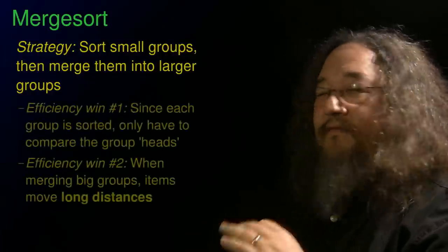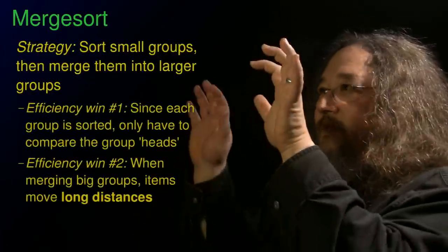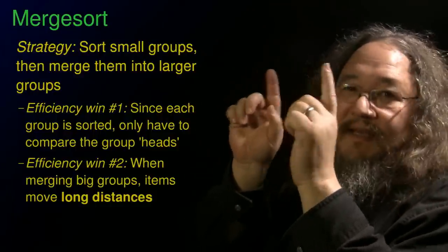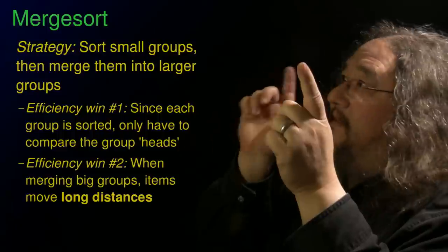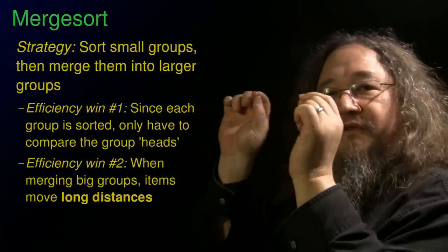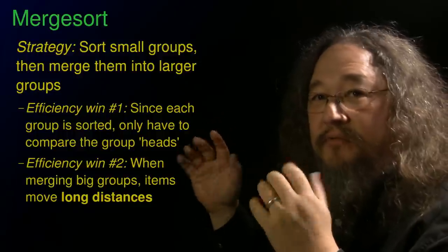Now this is a clever idea for at least two reasons. So the efficiency win number one is, once you have these sorted groups that you're putting together, you only have to check the lead guy. Is this guy less than that guy? Because you know all the rest of them are bigger. So you can use the front guy as sort of a proxy for comparing against all the rest of each group. That's very clever.